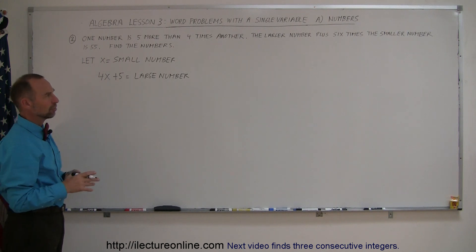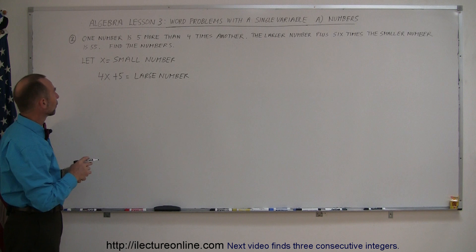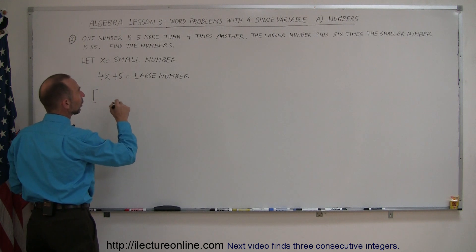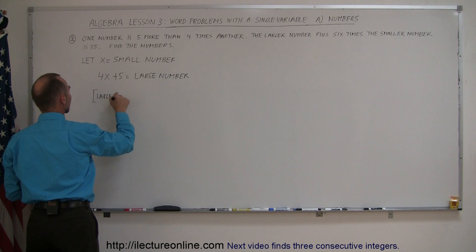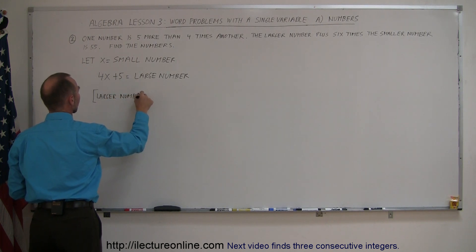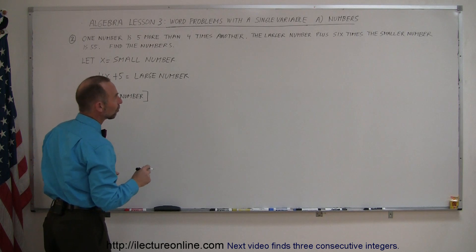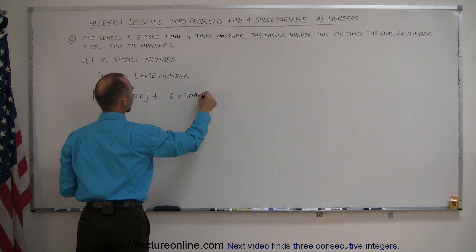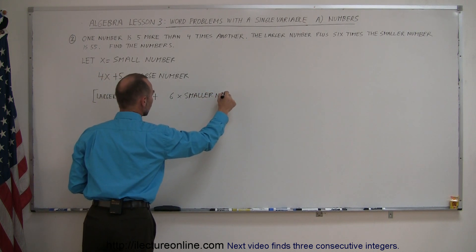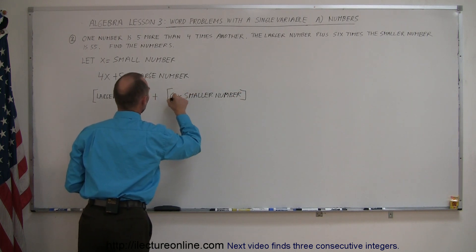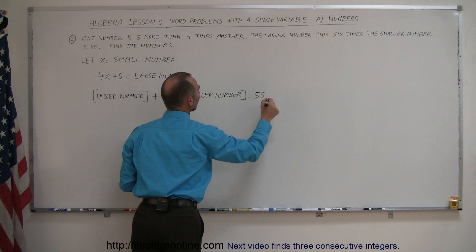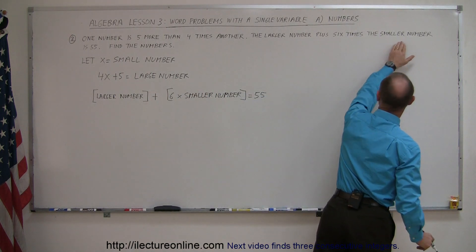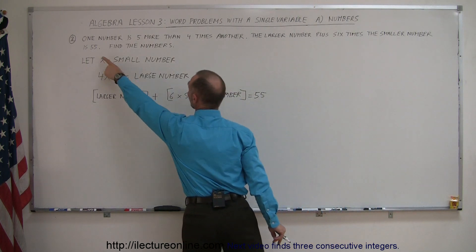So now, to figure out what the numbers are, they give us some more information. They tell us that the larger number plus six times the smaller number is 55. So it's good to write that out in English. You could say the larger number, and add that to six times the smaller number. So the larger number plus six times the smaller number—that's exactly what it says here—equals 55.